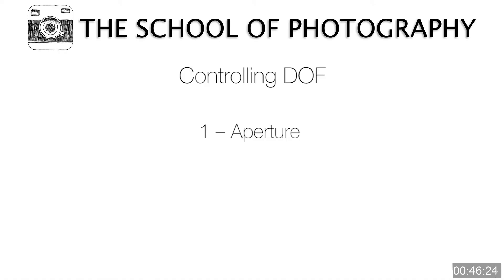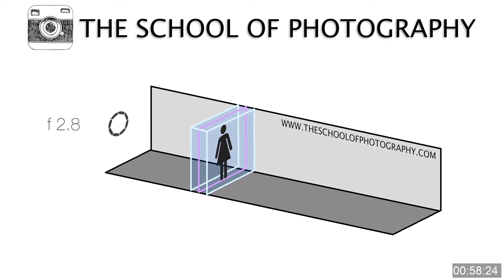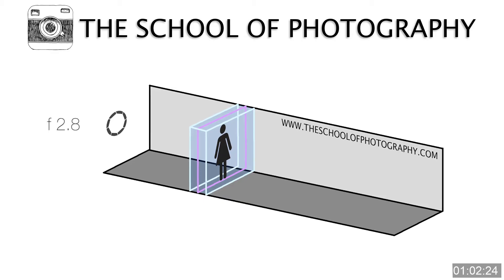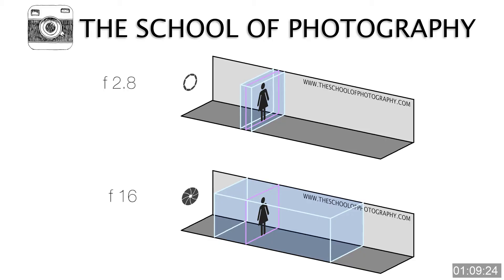There are three things that control depth of field in photography. The first is aperture. A wide aperture such as f/2.8 will give you a shallow depth of field, as seen in this illustration. The purple line is the focus point, and the shaded area around it is the depth of field — so not much distance is sharp.